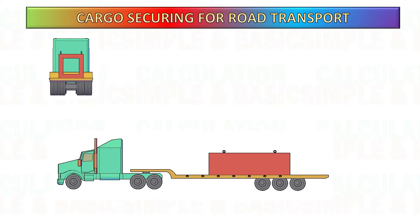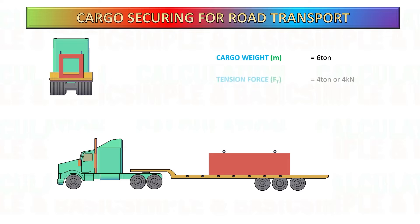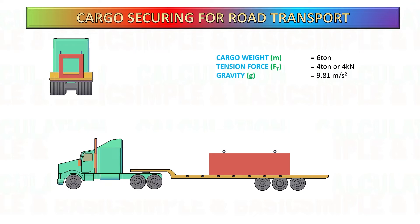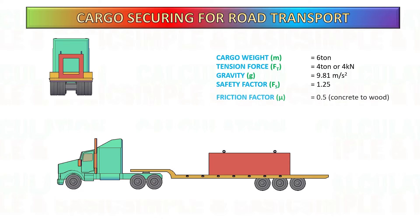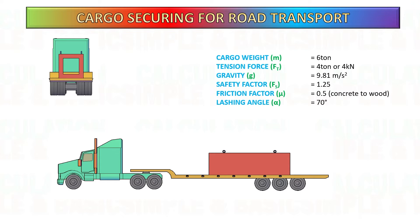Example: Calculate the required number of top over lashing for the concrete cargo weighing 6 ton, using a tension device of 4 ton. Consider the angle of lashing is 70 degrees, and the friction factor is 0.5.